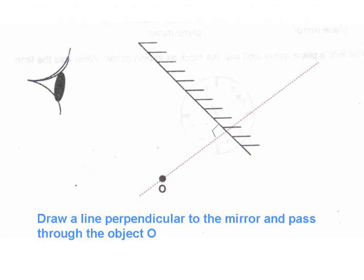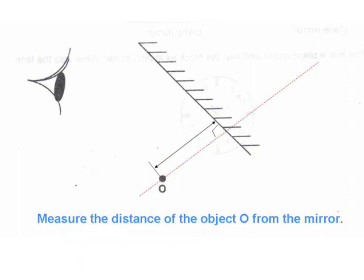First, you draw a perpendicular line to the mirror that passes through the object O.